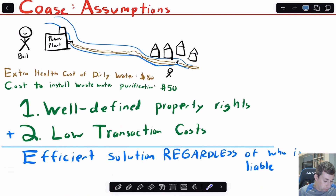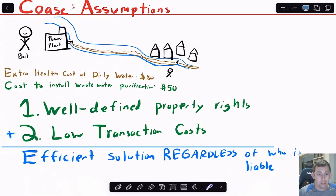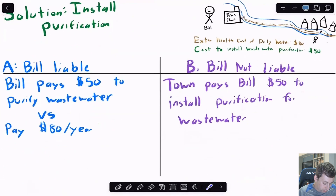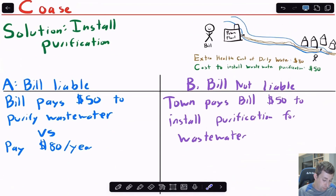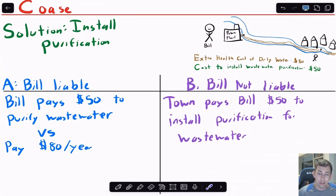Now going to Coase: there are two assumptions we need for the Coase theorem. The first is that there are well-defined property rights. The second is that there are low or zero transaction costs. That's how we get to the efficient solution, which again is that Bill installs the water purification system. First, let's think about what happens if Bill is liable and has to pay $80 of damages to the town. Well, he's just going to pay the $50 to install the water purification system — no damages, and we're all set.